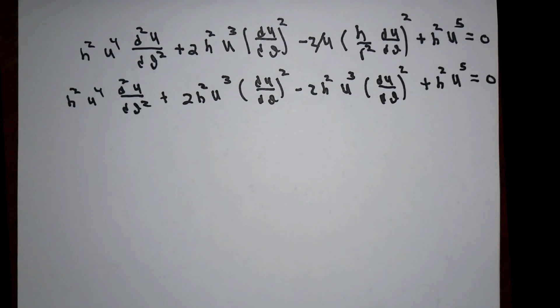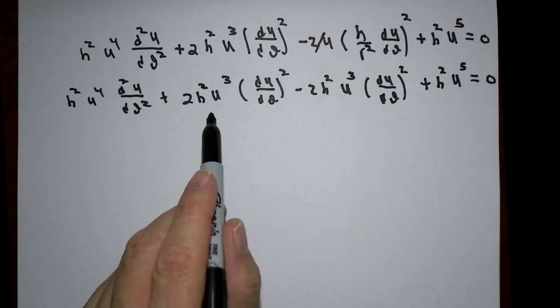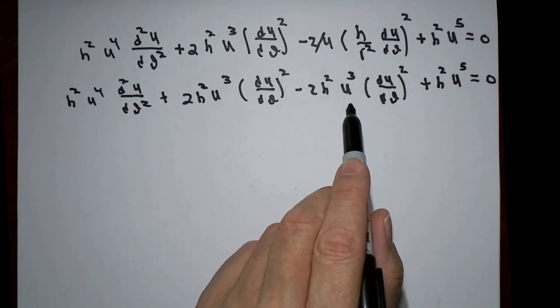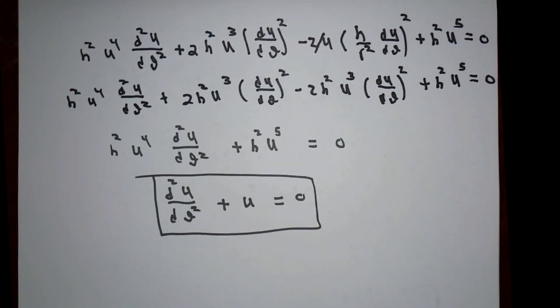Expressing everything in terms of u and theta, we end up with this awful looking thing, and then a miracle happens. This term and that term cancel each other out. So after all of these substitutions, rearrangements, product rules, and chain rules, when the dust finally settles, the differential equation reduces to the second derivative of u with respect to theta plus u equals zero.